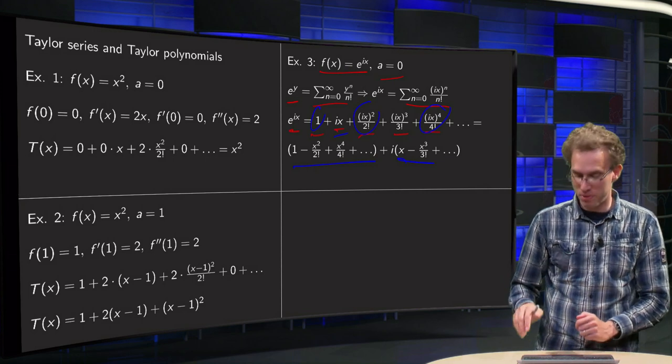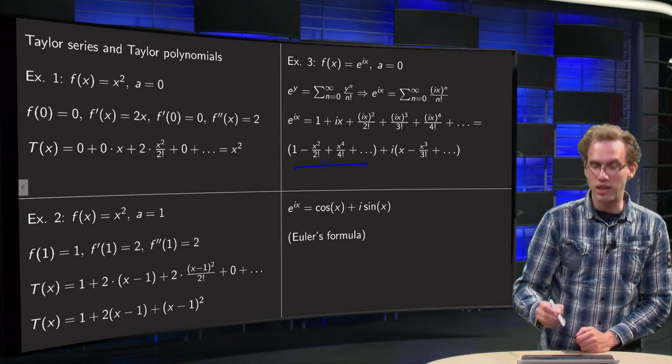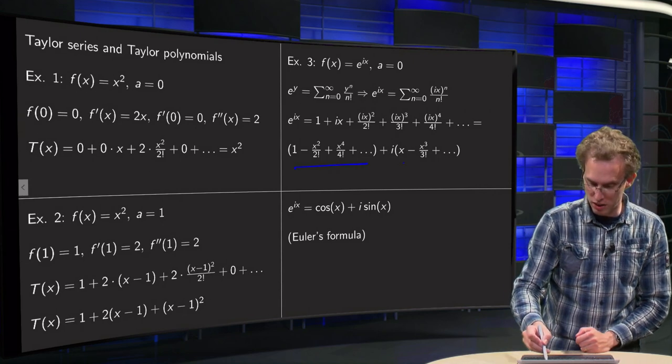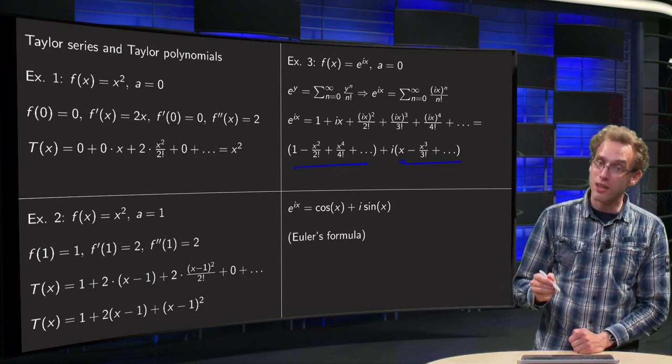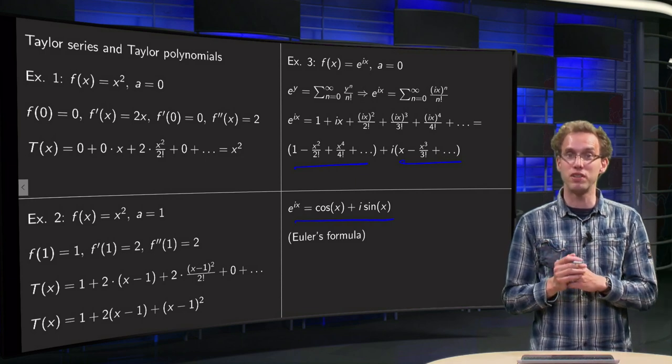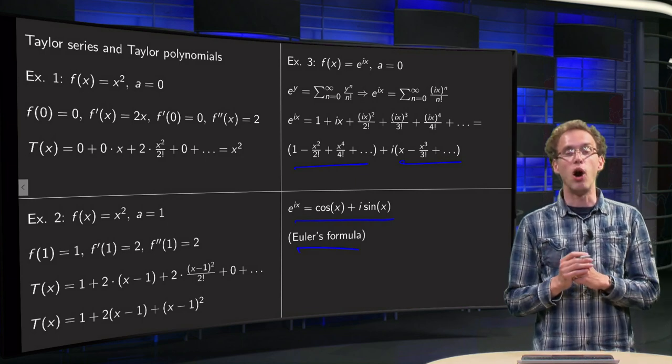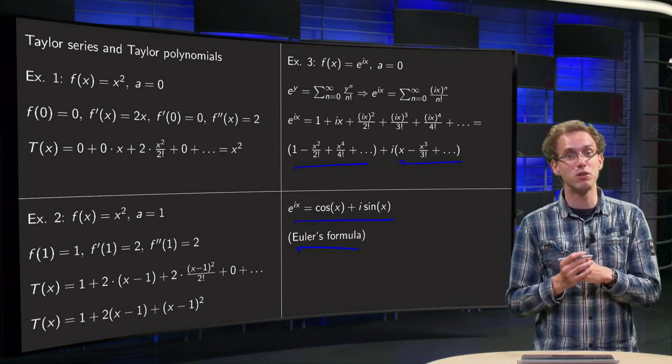And now, I hope you recognize something, because what you see here is the Taylor series of cos(x), and here the Taylor series of sin(x), the first part at least. So you see e^(ix) = cos(x) + i·sin(x), which is exactly Euler's formula that you have hopefully seen already when you were looking at complex numbers.